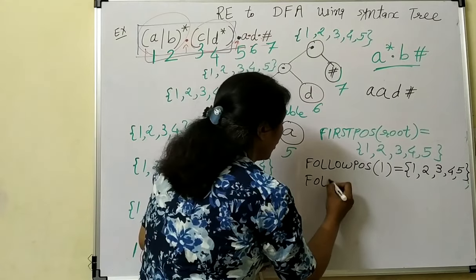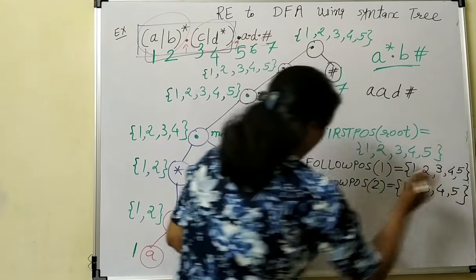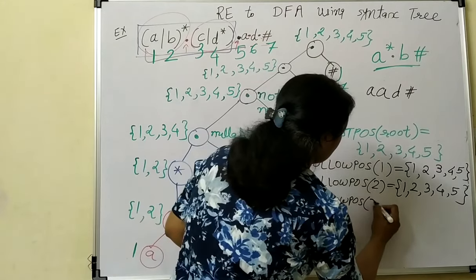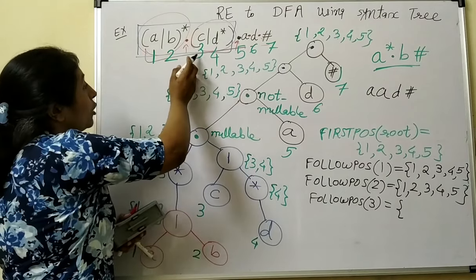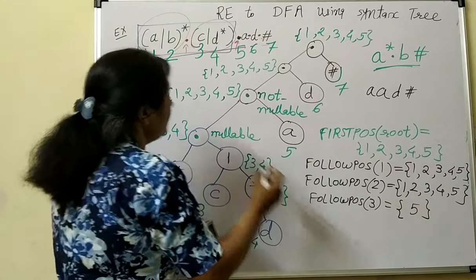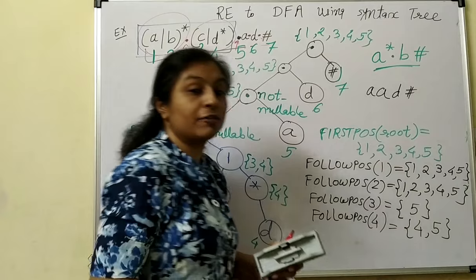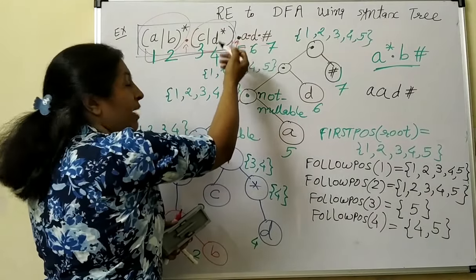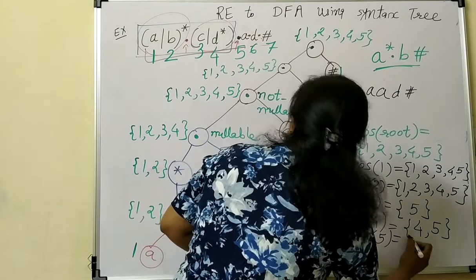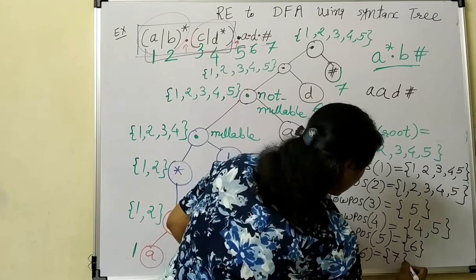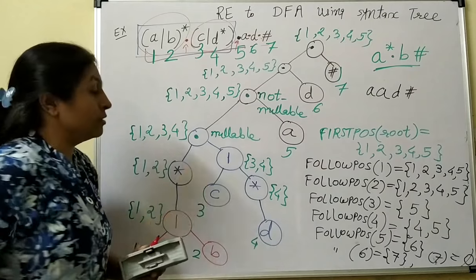Symbol 6 can never follow symbol 1. Follow position of 2 is also the same: {1, 2, 3, 4, 5}. Follow position of 3 is 5, because when symbol 3 is selected, symbol 4 is never selected since it is a union. Follow position of 4 is {4, 5} — it is Kleene's closure so D can follow D, or symbol 5 can follow. Follow position of symbol 5 is only symbol 6. Follow position of 6 is 7. Follow position of 7 is empty — no symbol follows symbol 7.